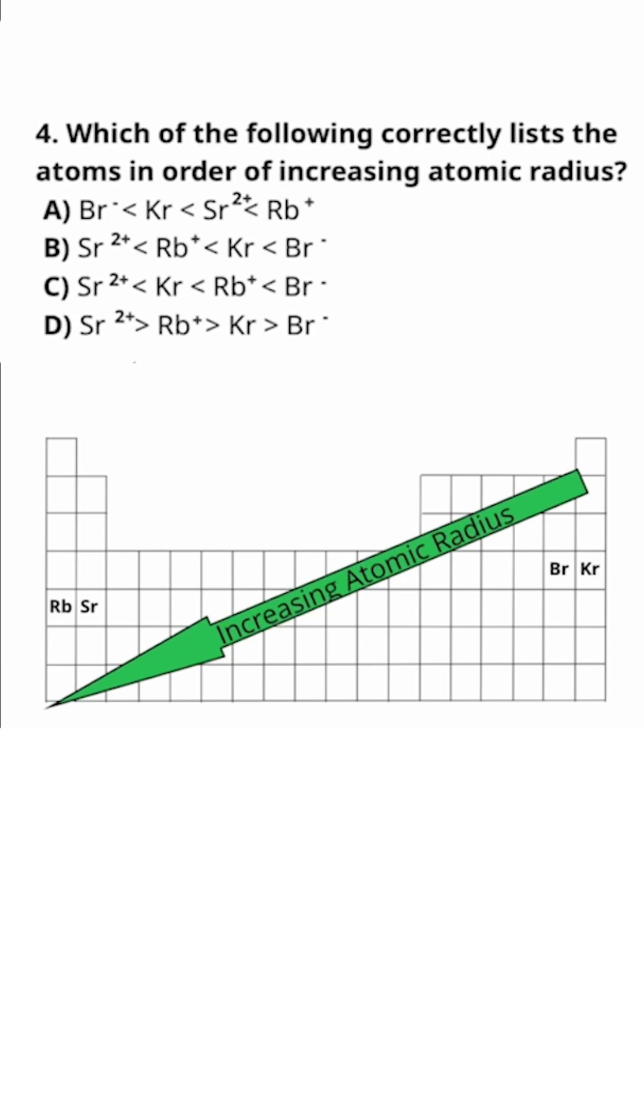To answer this question, we need to talk about why that trend is the way it is. By using electron configuration, you can see that the atom's valence electrons occupy a higher energy level as you go down the periodic table.